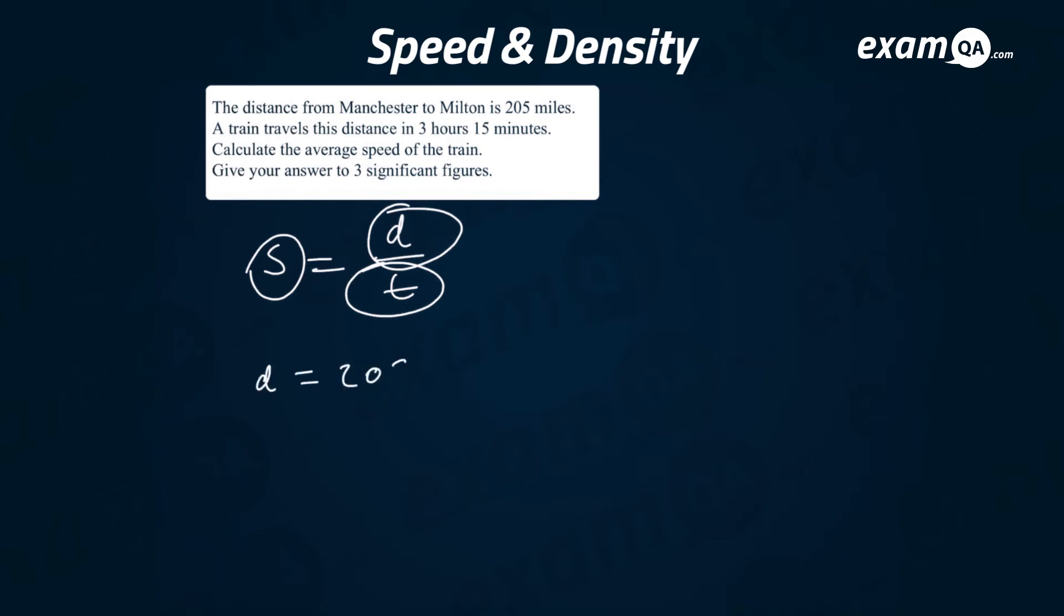What is the distance, what is the time? They gave us the distance in the first line so the distance is 205 miles. The time here we need to be careful because they said 3 hours and 15 minutes. We need to convert this into a decimal. Let's convert it into minutes: 3 hours just means 3 times 60 minutes plus 15 minutes and you should get 195 minutes.